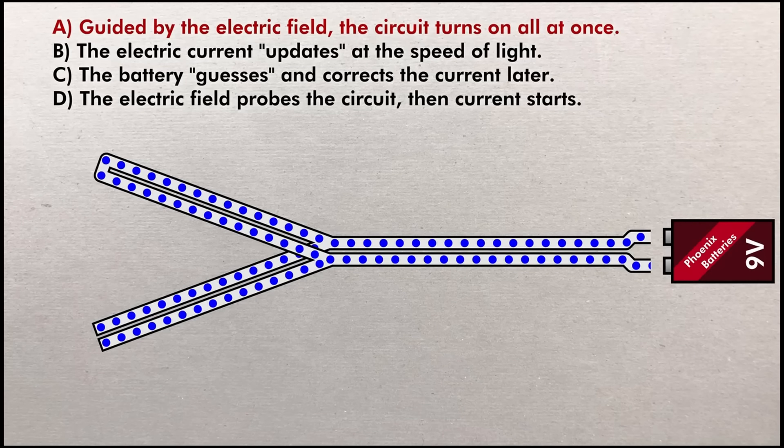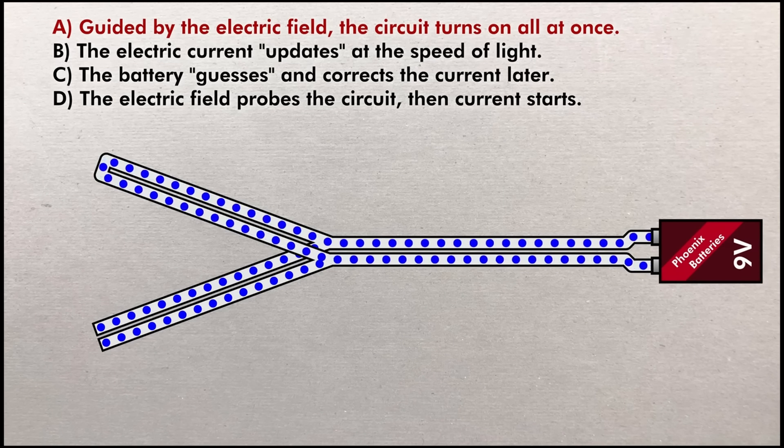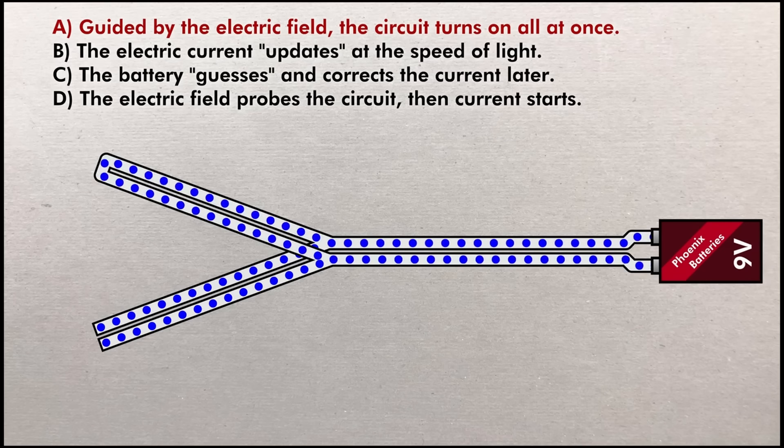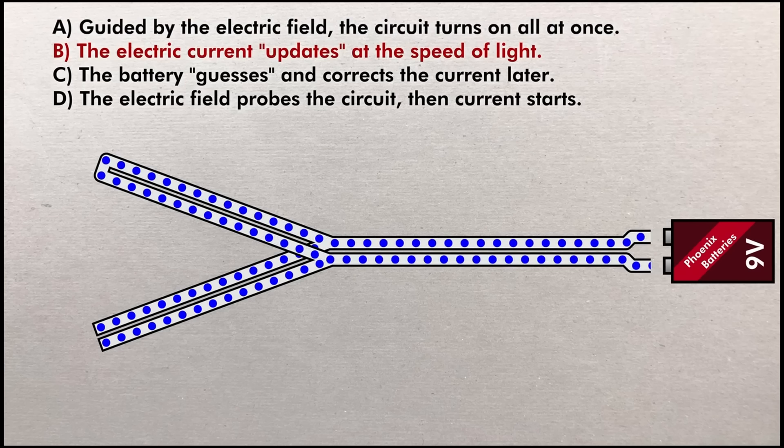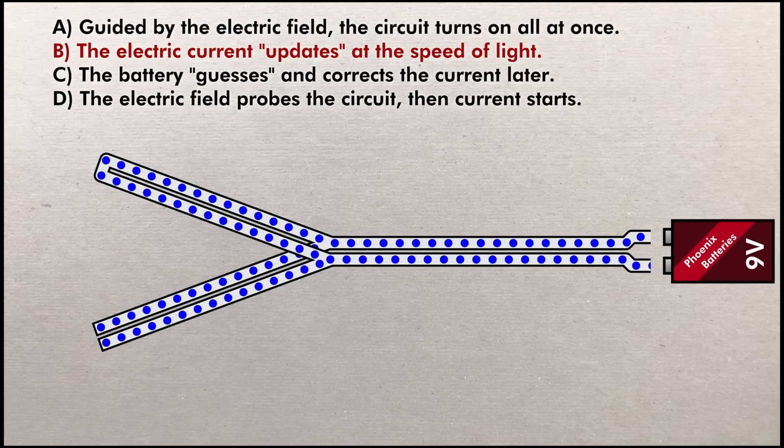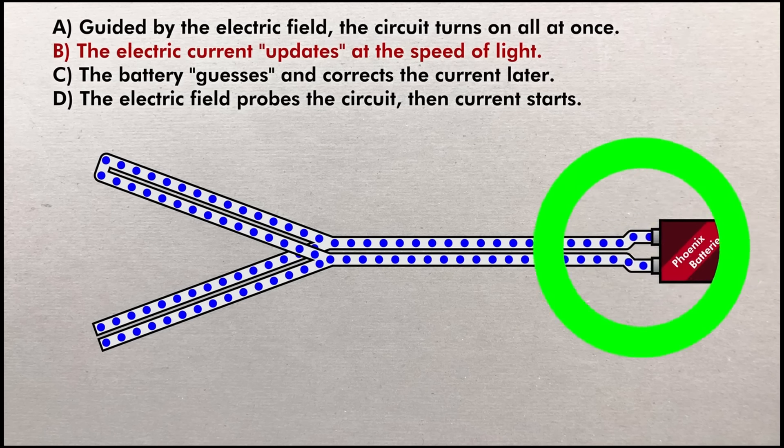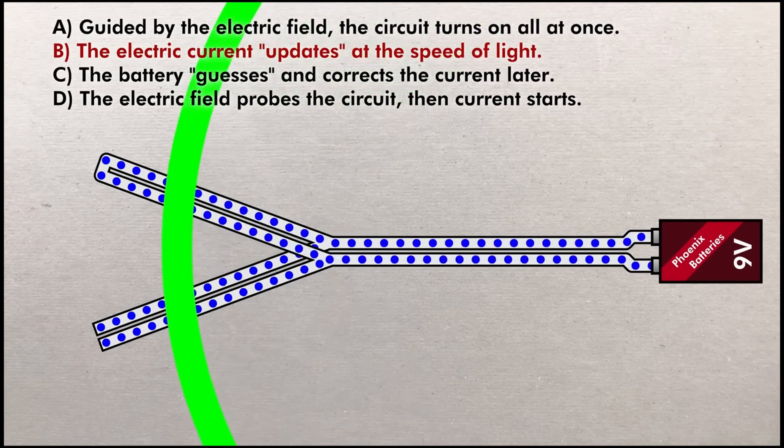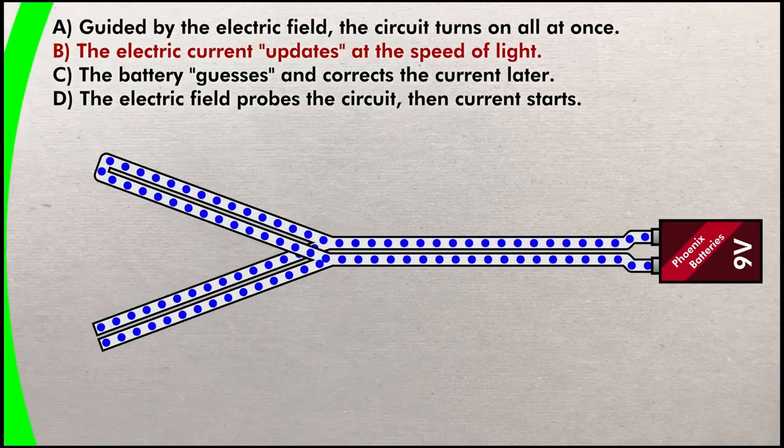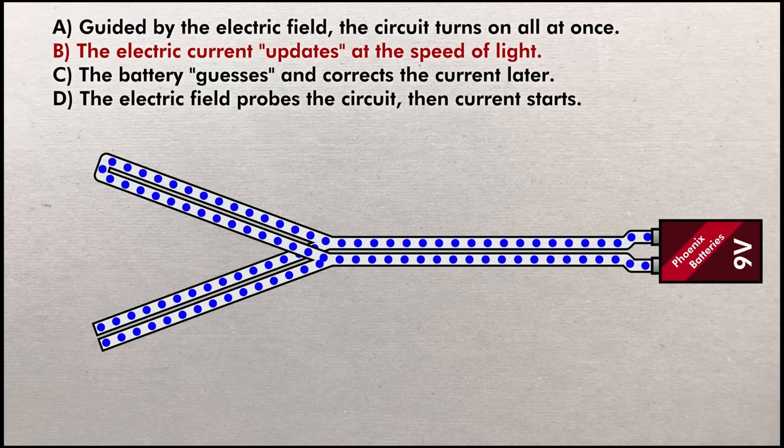Option A: the electric field has already solved the circuit. As soon as the battery is connected the correct amount of current will flow through the connected branch and no current will flow down the disconnected branch. Option B: the electric field has already solved the circuit but it still has to update information at the speed of light. So as soon as you connect the battery the correct current starts to flow in the wires in a bubble that expands from the connection point.